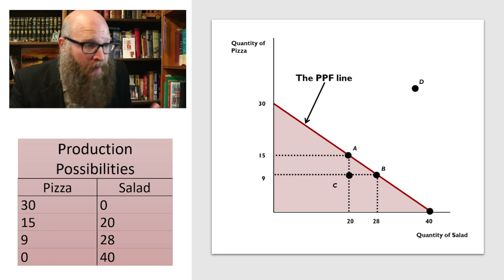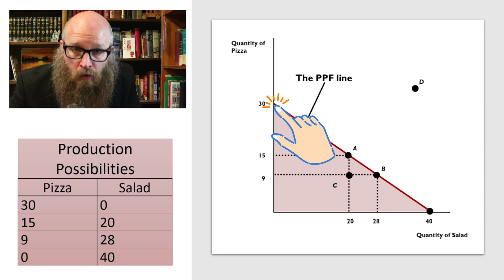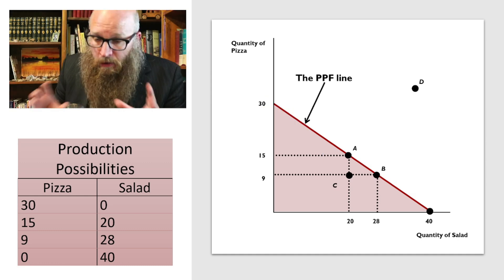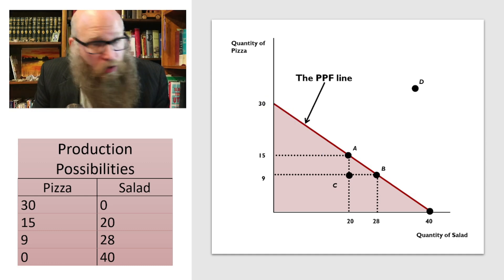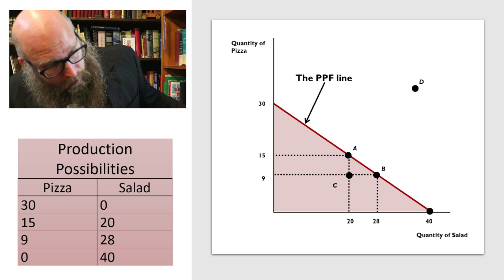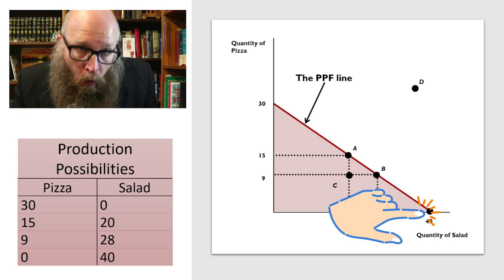If we spend all of our time and energy only producing pizza, which means we're not sending any workers or we're not using any of our buildings to make salad, the maximum amount of pizza we could produce is 30. Whereas if we spend all of our time and energy making salad and don't make any pizza, what an unfortunate world that would be, the maximum amount of salad would be 40.